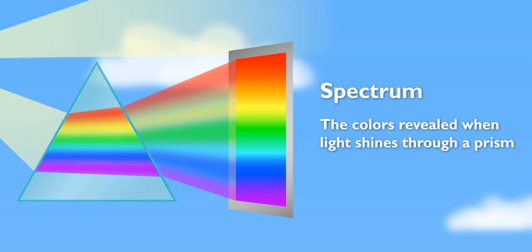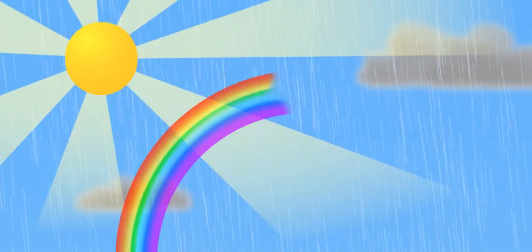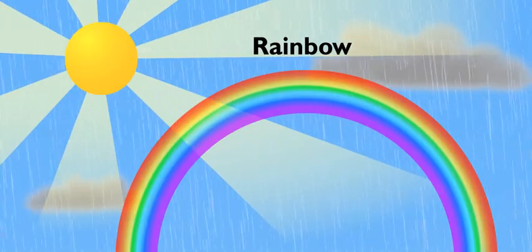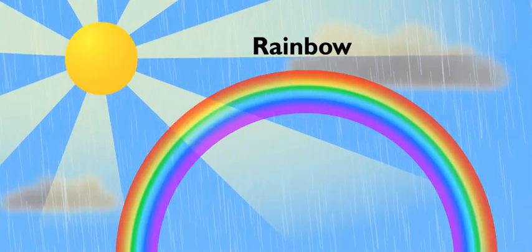Looks like a rainbow to me. Exactly. Raindrops can work like prisms. When you see a rainbow, it's because lots of raindrops are spreading the spectrum of colors across the sky.